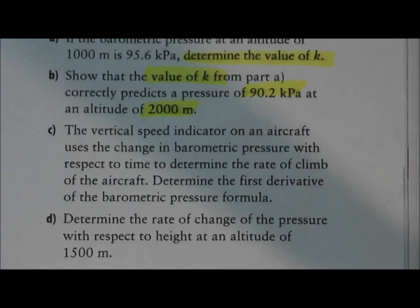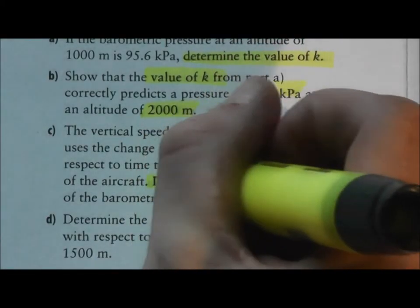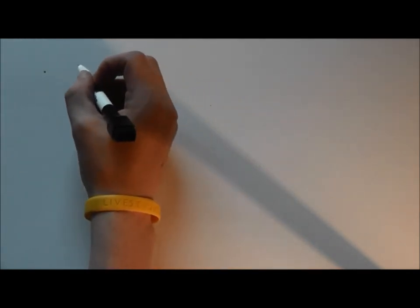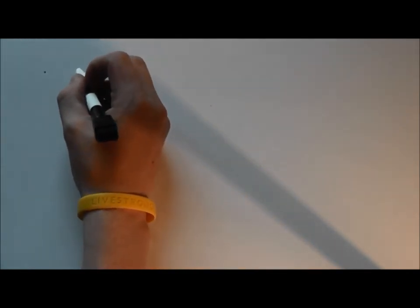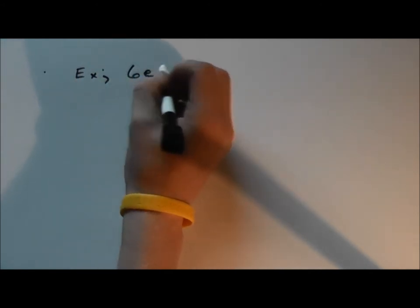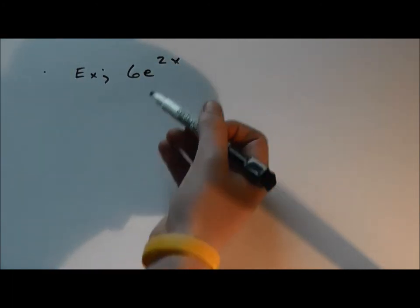In 15c, we are being asked to determine the first derivative of the barometric pressure formula. In 15c, we have to remember that the function is an exponential function. So for example, here's something very similar to our function that we have in question 15c.